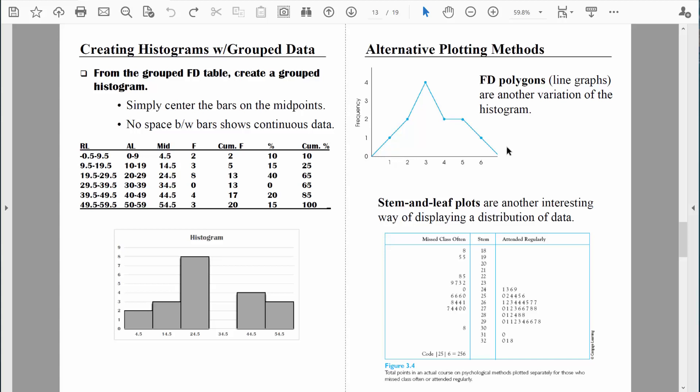Something you won't see nearly as often is known as a stem-and-leaf plot or stem plot. These plots are really very interesting. Each data point is represented by the combination of a stem and a leaf. The data in this plot represents students' scores in a course, divided between students who miss class often and students who attend regularly.